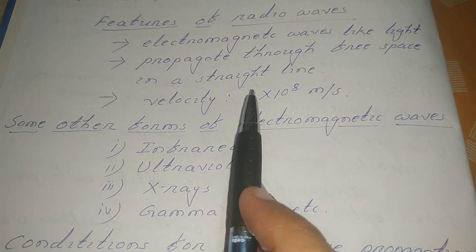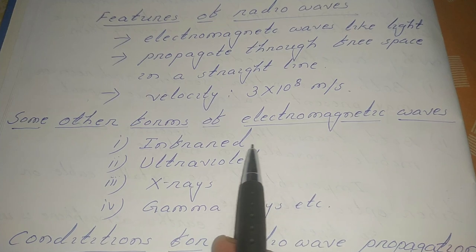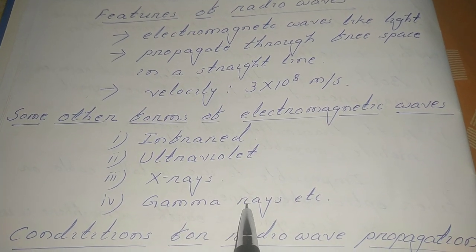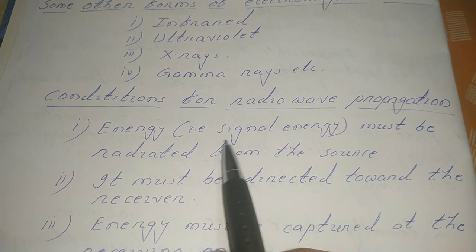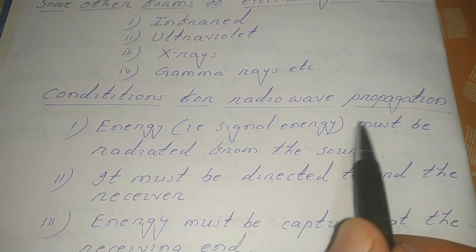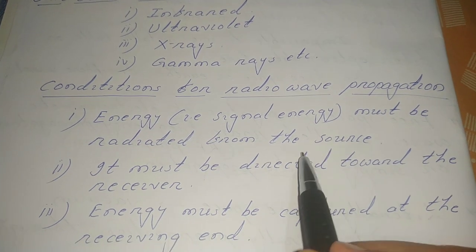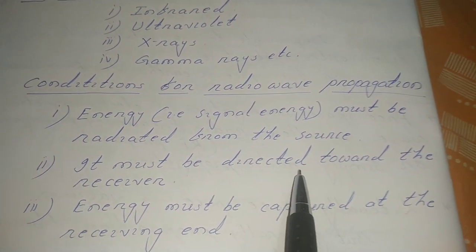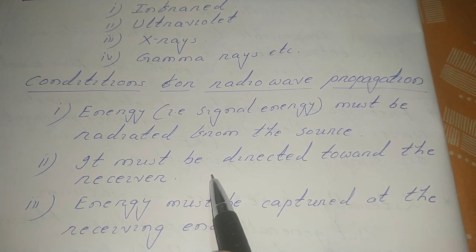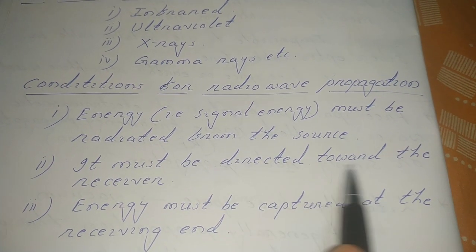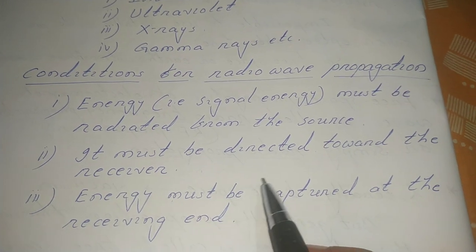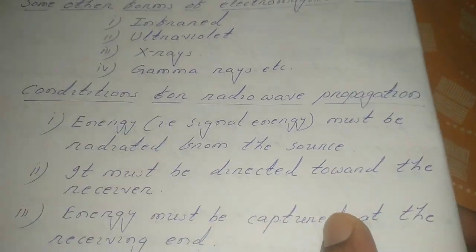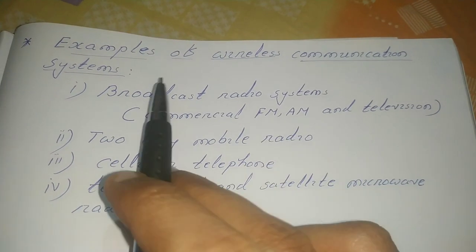Besides radio waves, other forms of electromagnetic waves are infrared, ultraviolet, X-rays, gamma rays, etc. The conditions for radio wave propagation are: first, the signal energy from the sender must be radiated from the source; second, the signal must be directed towards the receiver; and third, the signal energy must be captured at the receiving end. These are the three conditions for radio wave propagation.